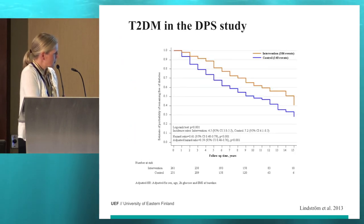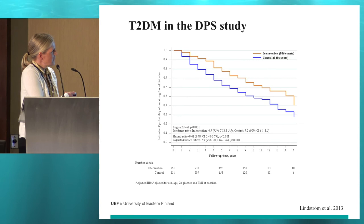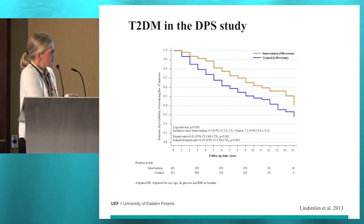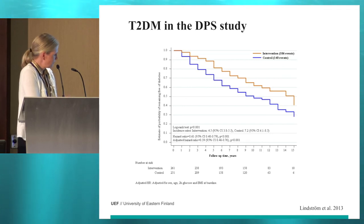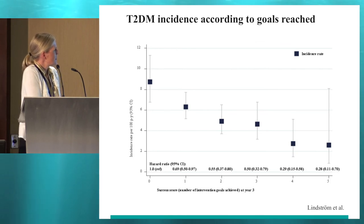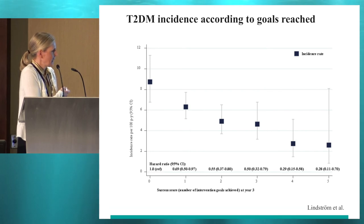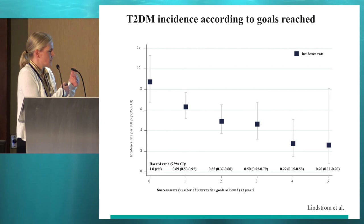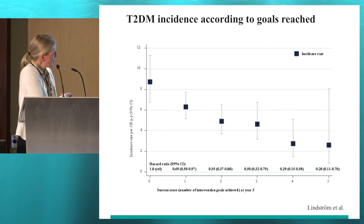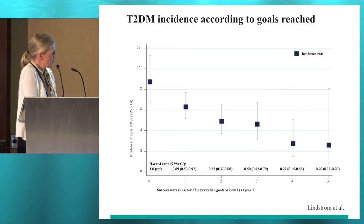The results are very impressive: in the intervention group, this is now a 15-year follow-up showing how the difference between the groups regarding type 2 diabetes incidence remains. And here you see the type 2 diabetes incidence according to goals reached at three years, when the intervention was stopped because the ethics committee thought the difference between the groups was so large that it was unethical to continue. The more goals you achieved, the less was your type 2 diabetes risk.